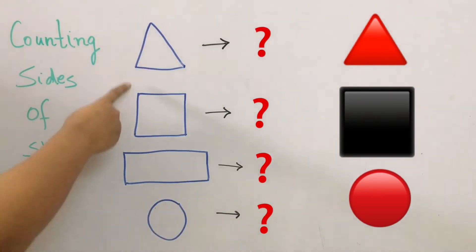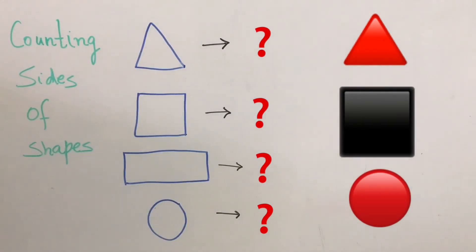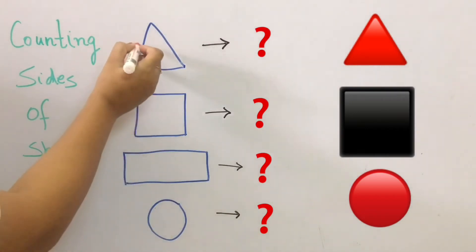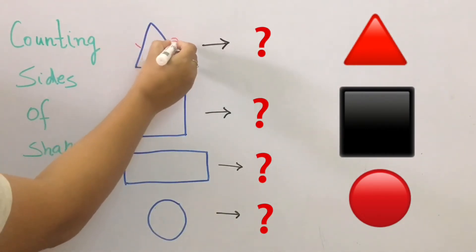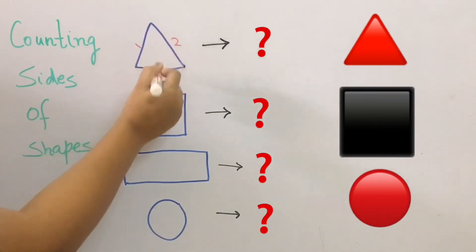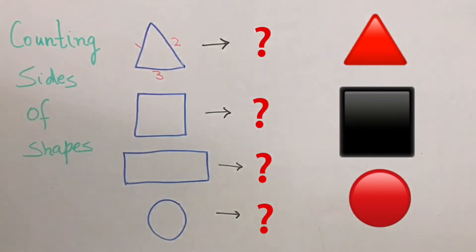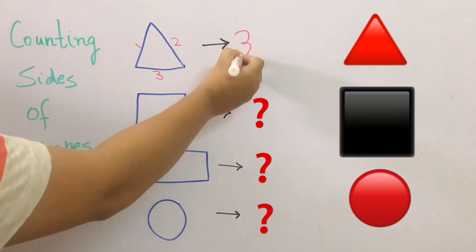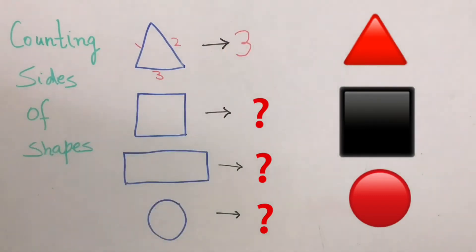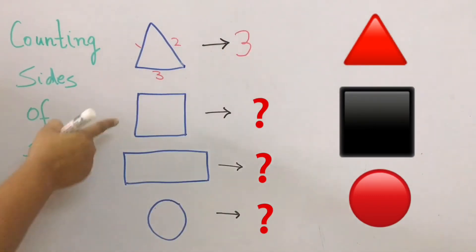The first shape we have is a triangle. Now triangle has how many sides? Let's count — one, two, and three. So how many sides are there in a triangle? There are three sides. See, so easy!